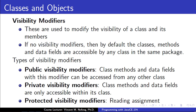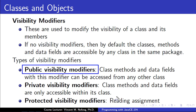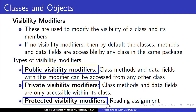We also need to understand the concept of visibility modifiers, the types we have in Java, and what happens when you use any of them. Visibility modifiers are used to modify how visible a class and its members are to another class. If we don't specify visibility modifiers, by default the classes, methods, and data fields are accessible by any class in the same package. Java provides three types of visibility modifiers: public - meaning the class, methods, and data fields can be accessed from any other class; private - meaning they are only accessible within the class itself; and protected - which is a reading assignment to students.